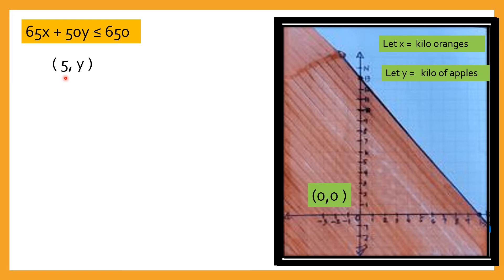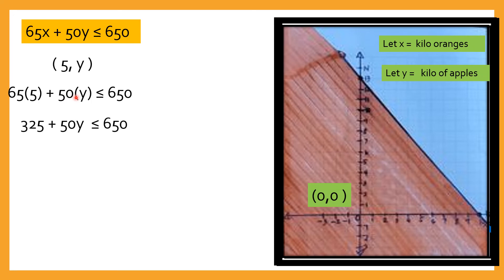So ito ngayon kung paano natin malalaman yan — substitute: 65 times 5 plus 50 times y is less than or equal to 650. And 65 times 5 is 325, plus 50y is less than or equal to 650.